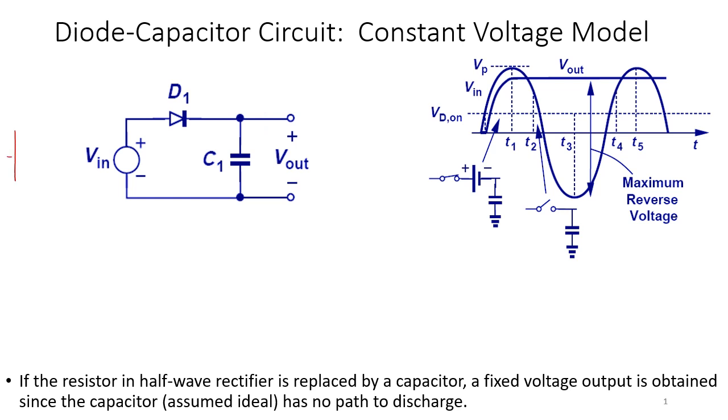So again, my V_in is a sinusoidal. Let's say the peak of the sinusoidal is 5 volts and the negative peak is negative 5 volts. Of course, I want to know how my V_out looks like.